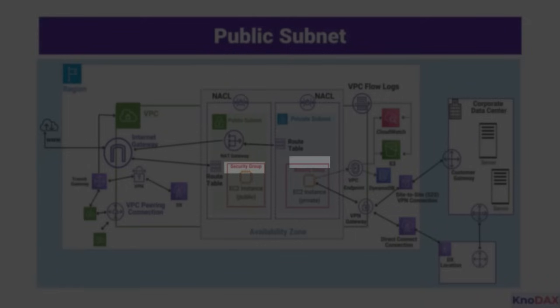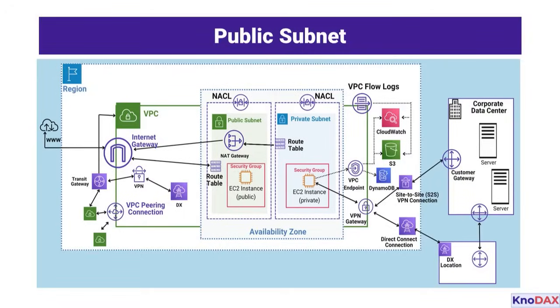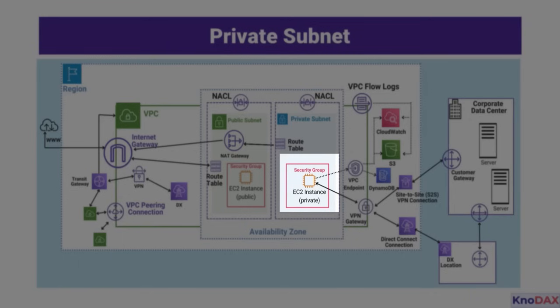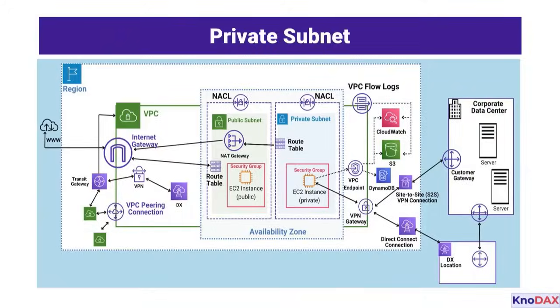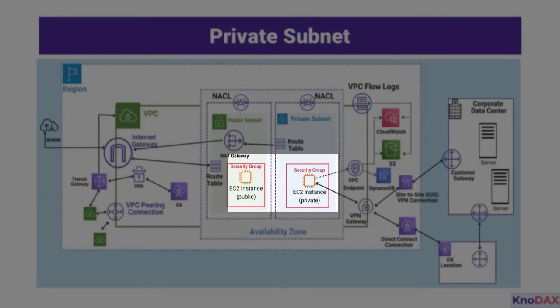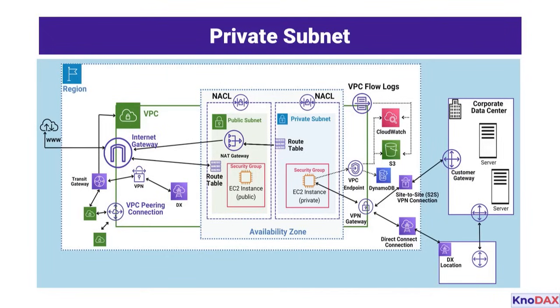Security groups are stateful, allowing both inbound and outbound rules to secure these resources. The private subnet contains another set of EC2 instances, also protected by their own security groups. Unlike the public subnet, these instances have no direct Internet access, enhancing security.